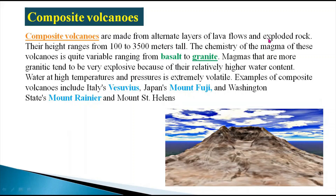The second major type is the composite volcano. Composite volcanoes are made from alternating layers of lava flows and exploded rocks. Their height ranges from 100 to 3,500 meters tall. The chemistry of the magma of these volcanoes is quite variable, ranging from basalt to granite.